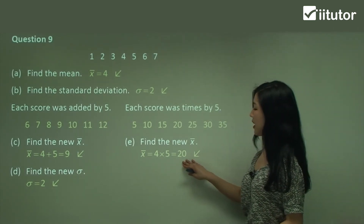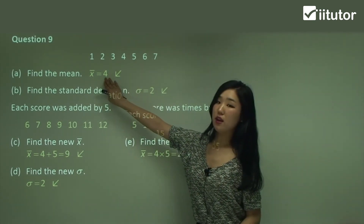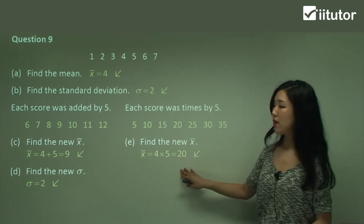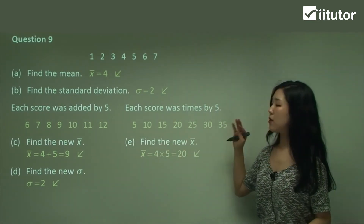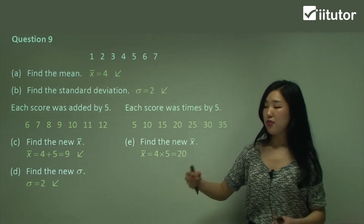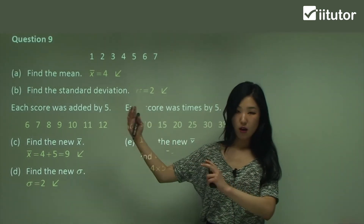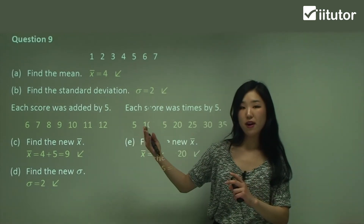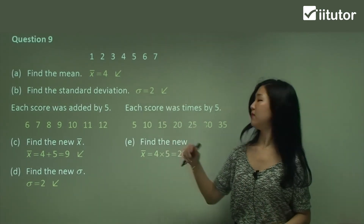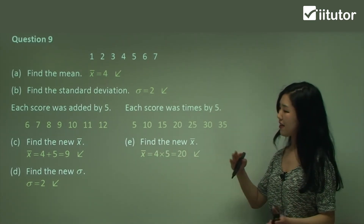See how the new mean is five times the old mean. This is our original mean — but when I multiplied all the scores by five, the mean is also multiplied by five. It's a similar concept to when we added by five. When all the scores are multiplied by the same value, the mean also rises by that value, because all the scores go up. That's how the new mean happens.